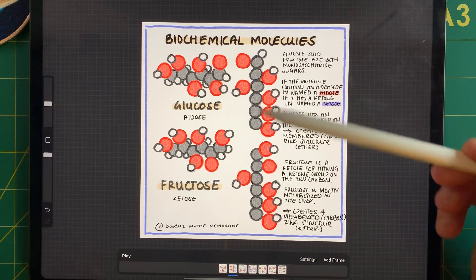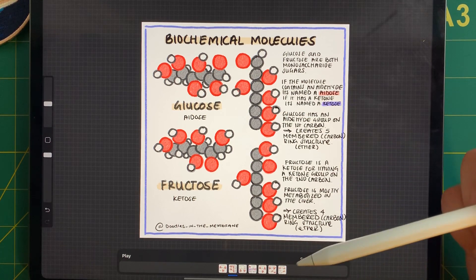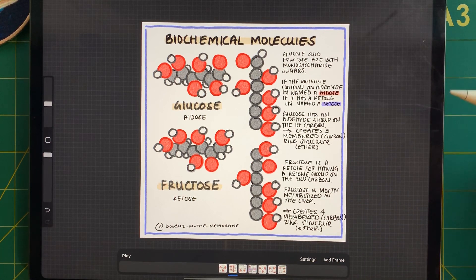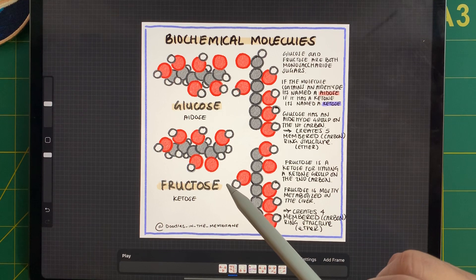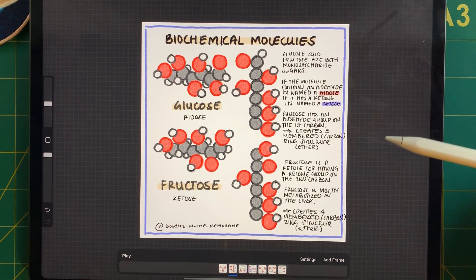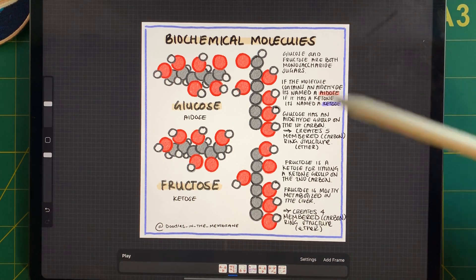These two molecules are isomers to one another. Now, the reason why I'm bringing fructose up is because in one of the reactions of glycolysis, we turn glucose into fructose, working with an isomerase. So I thought it would be a good idea to compare them now.